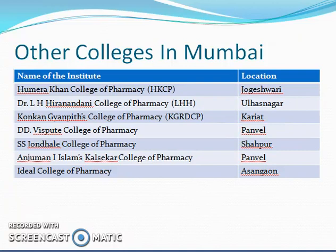Other colleges in Mumbai include HK College at Jogeshwari, LH Hiranandani at Ulhas Nagar, Konkan Gyanpeeth at Karjat, Vispute College at Panvel, SS Jondhale at Shahpur, Kalikshara College at Panvel, and Ideal College at Asangaon. These are some of the colleges that majority of the students venture into, and there are a few more which have not been mentioned on this list.